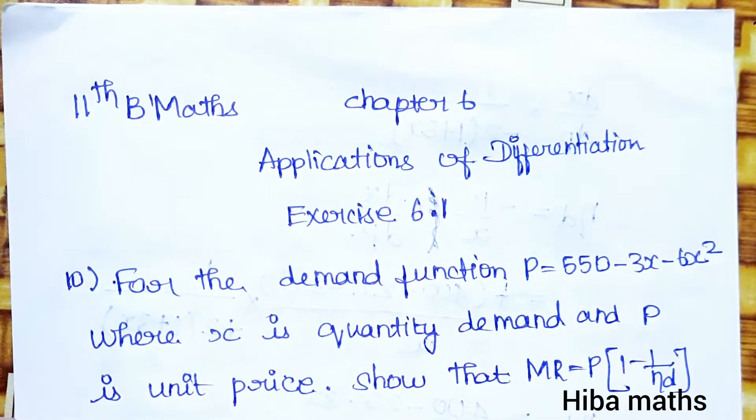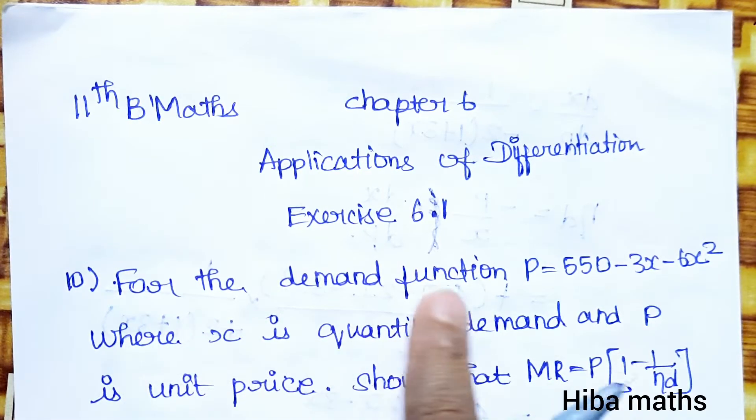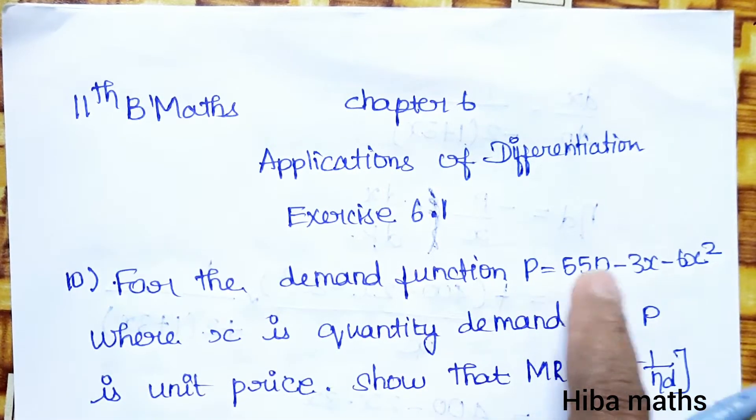Hello students, welcome to Hiba Maths. 11th standard business maths, chapter 6, applications of differentiation, exercise 6.1. The 10th question will be solved in this video. For the demand function P equals 550 minus 3x minus 6x square, where x is quantity demand and P is unit price.